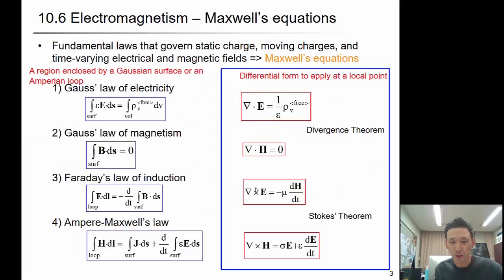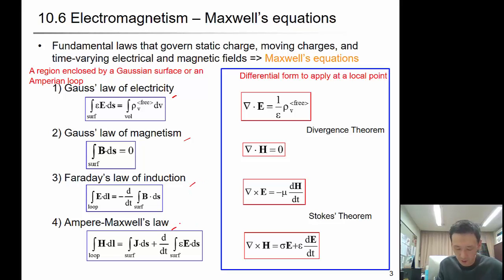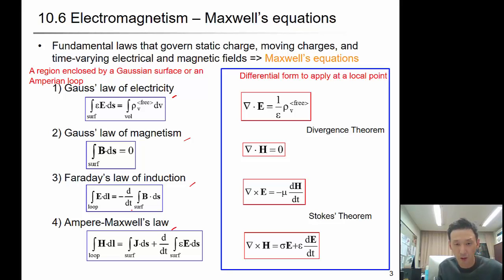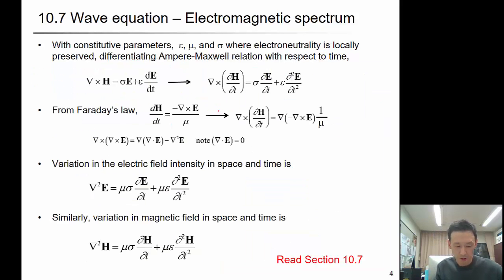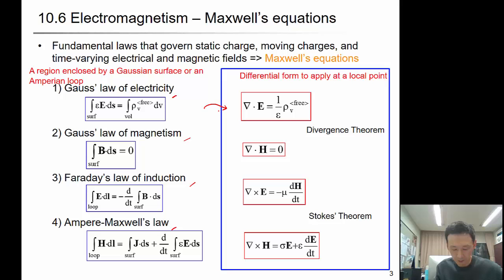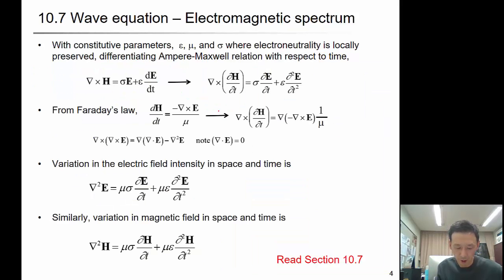In the previous lecture, we've seen Gauss's law of electricity, Gauss's law of electromagnetism, Faraday's law of induction, and Ampere-Maxwell's law that integrates the magnetic induction with the electric field and the current density. These laws can be expressed in integral form, as shown in the left column, and also in differential form to apply at a local point using the divergent and gradient. Using these equations, we can finally derive the wave equations for the electromagnetic wave.